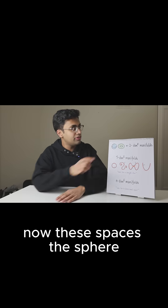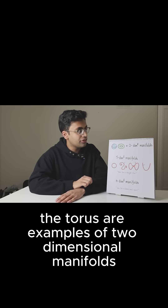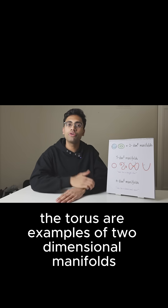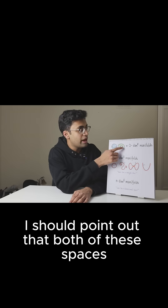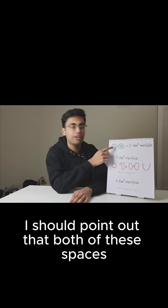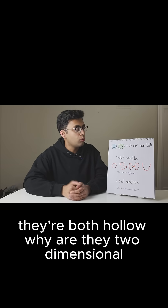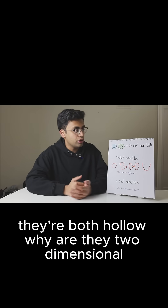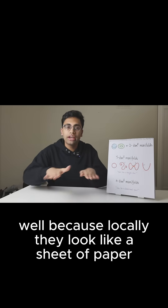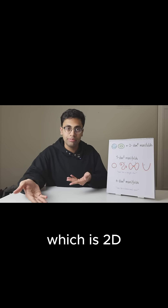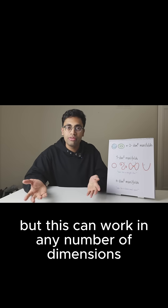Now, these spaces — the sphere and the torus — are examples of two-dimensional manifolds. I should point out that both of these spaces have the insides not filled in; they're both hollow. Why are they two-dimensional? Well, because locally they look like a sheet of paper, which is 2D. But this can work in any number of dimensions.